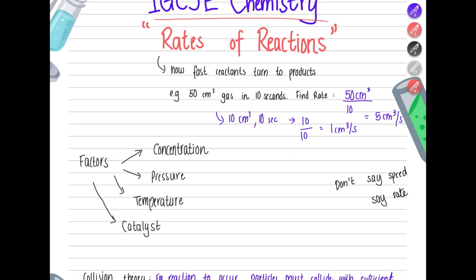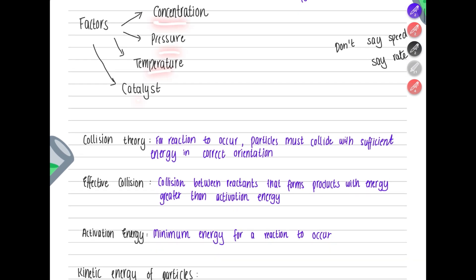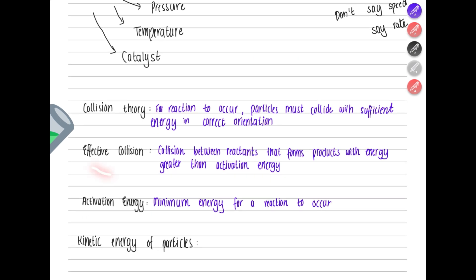For IGCSE, you need to know four factors that affect rate of reaction. Before explaining them, you need to understand collision theory. Collision theory states that for a reaction to occur, particles must collide with sufficient energy in the correct orientation. An effective collision is one between reactants that actually forms products, because they collide with energy greater than the activation energy. Activation energy is the minimum energy required for a reaction to occur.